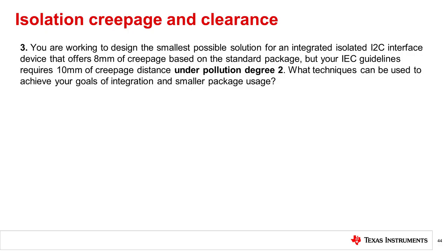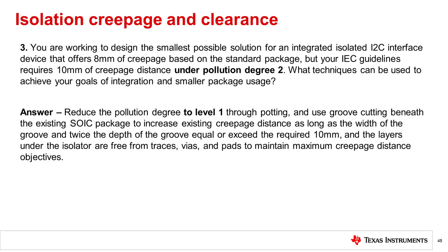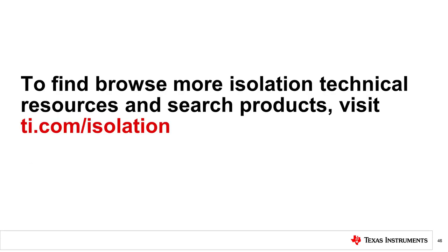Question 3: You are working to design the smallest possible solution for an integrated isolated I2C interface device. It offers 8 mm of creepage based on the standard package, but your IEC guidelines require 10 mm of creepage distance under pollution degree 2. What techniques can you use to achieve your goals of integration and smaller package usage? Answer: You could reduce the pollution degree to level 1 through potting and use groove cutting beneath the existing SOIC package to increase the existing creepage distance. This concludes TI's Precision Labs — Water Creepage and Clearance. You can browse more isolation topics and resources at www.ti.com/isolation.